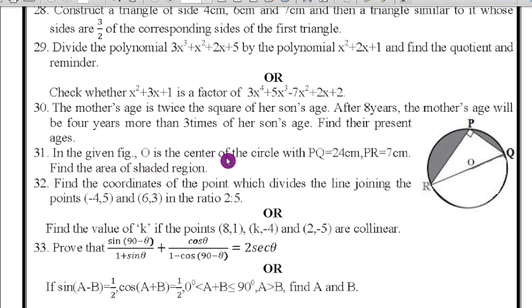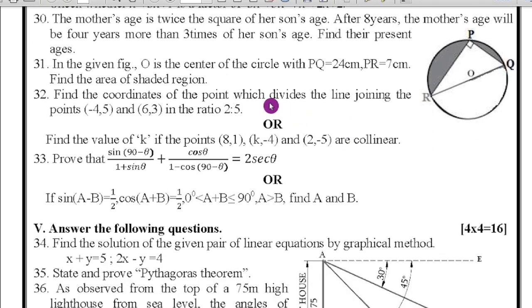Question number 31: in the given figure O is the center of the circle with PQ = 24 cm and PR = 7 cm. Find the area of the shaded region. Here use Pythagoras formula, find RQ, then easily you will get the marks. Next 33: find the coordinates of the points which divide the line joining the points (-4, 5) and (6, 3) in ratio 3:2. So ratio is given as M₁ and M₂. You have to find the formula, find the coordinates P(x, y). If you know the formula you can do it. Next, find the value of k if the points (8, 1), (k, -4), and (2, -5) are collinear. So collinear is given, so easily find out.